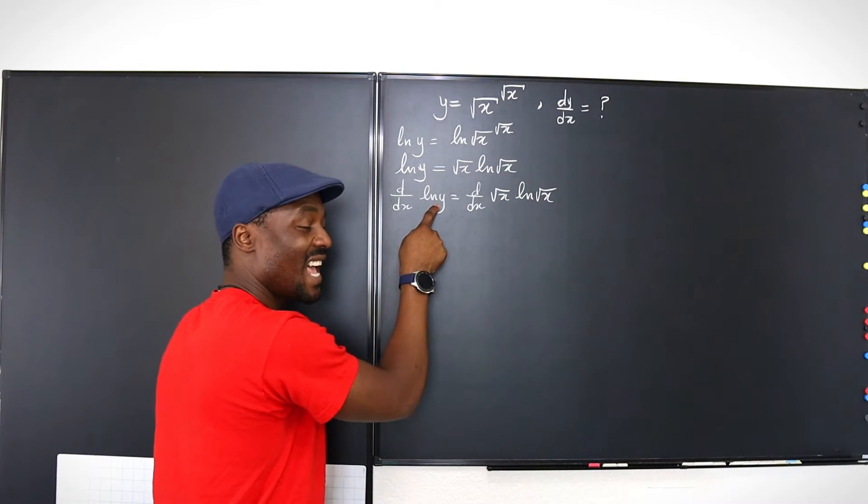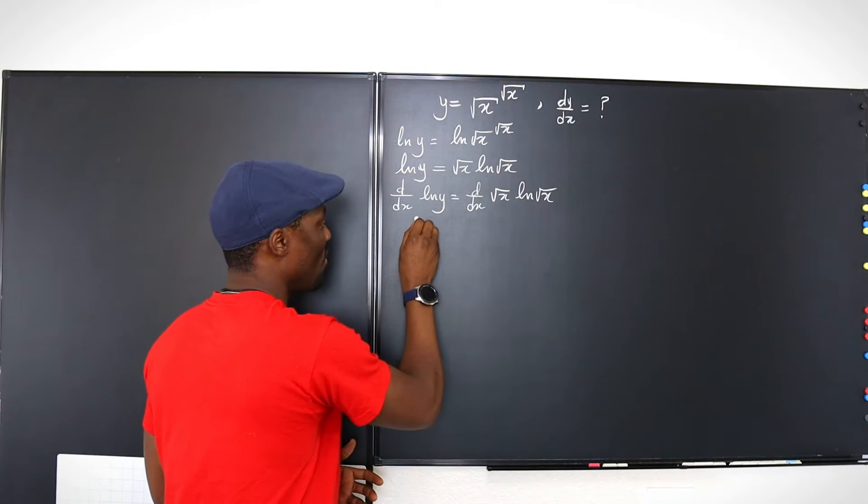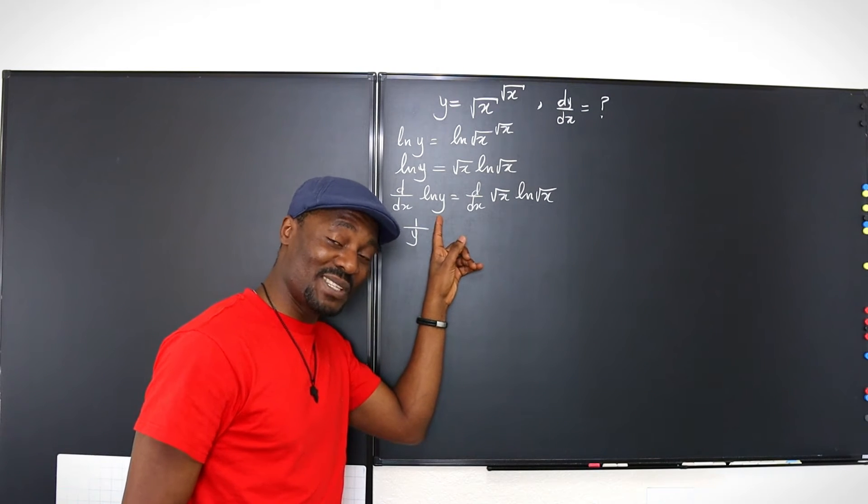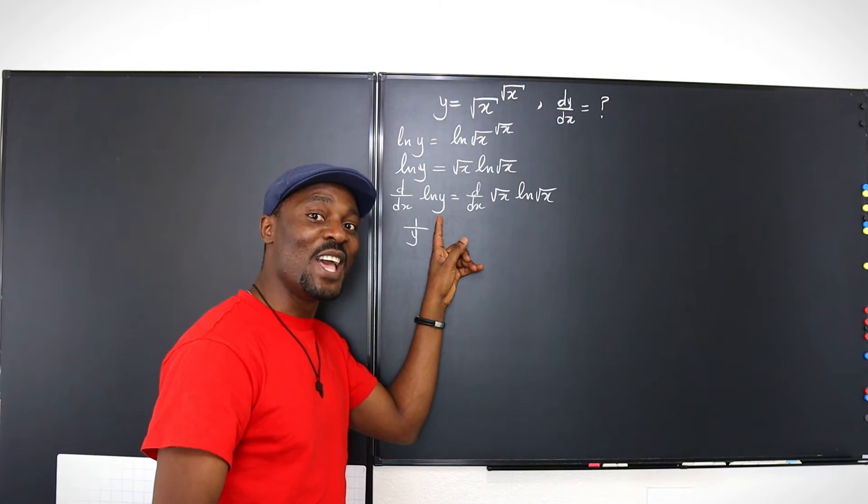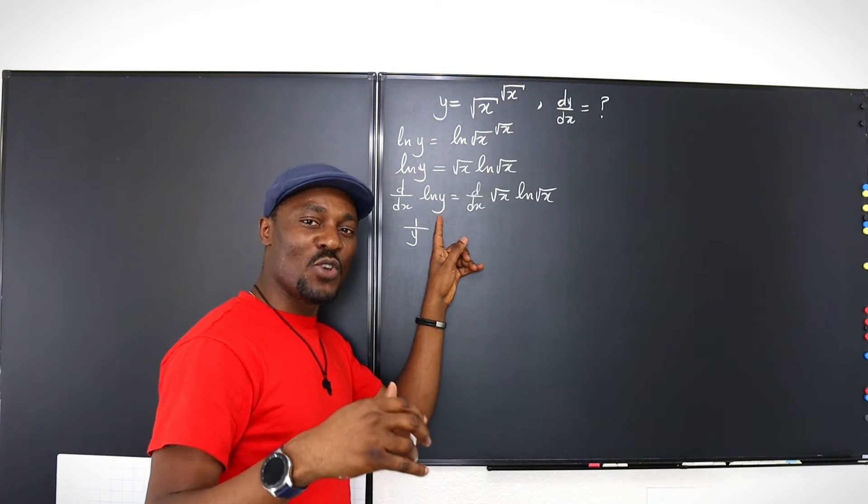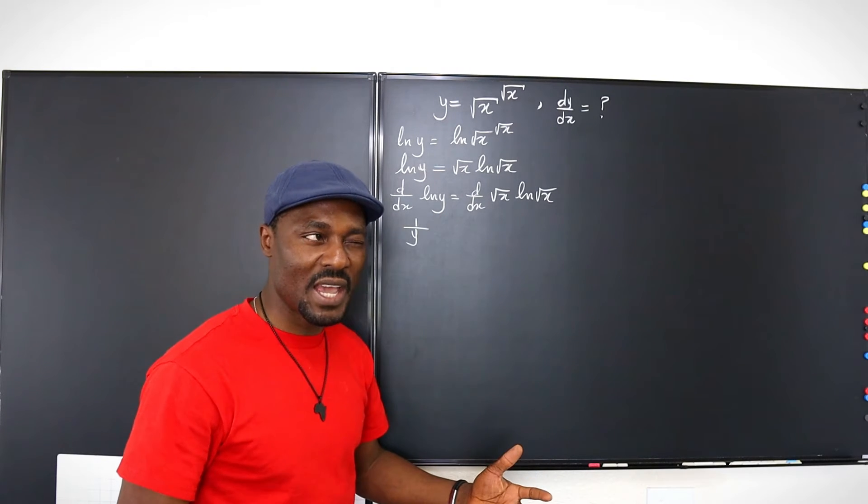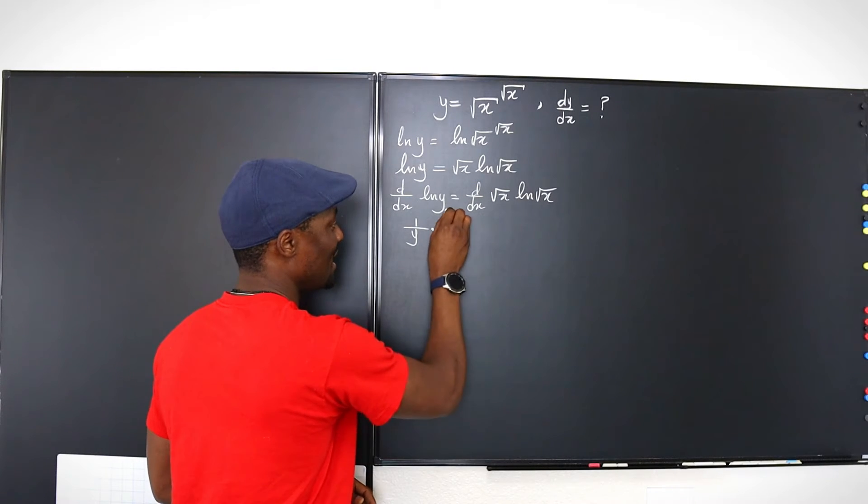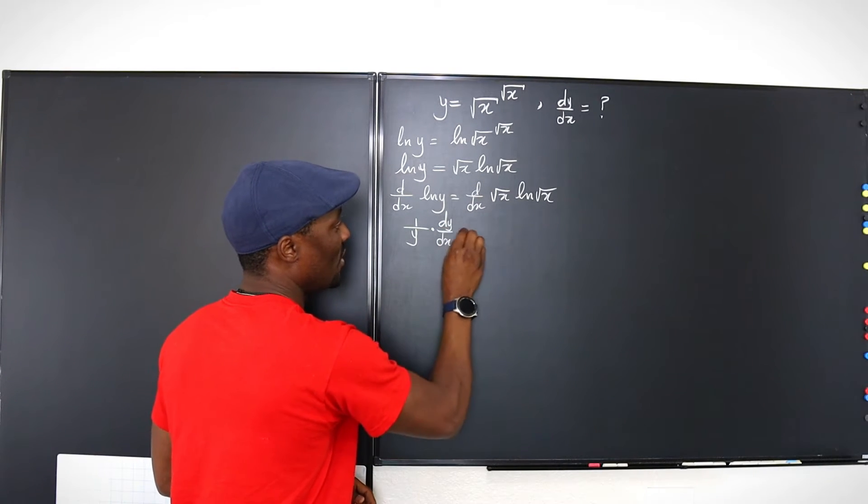This is going to be, if you differentiate ln of anything, it's going to be 1 over that thing. Unless that thing, in this case, which is y, is a function of x. Therefore, you have to differentiate that itself. So if we differentiate y, we get dy/dx, which is what we're looking for. So that's going to be dy/dx.